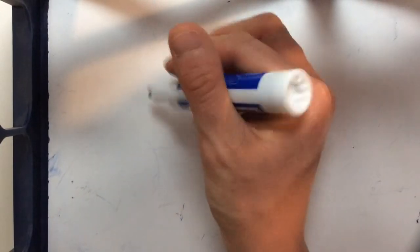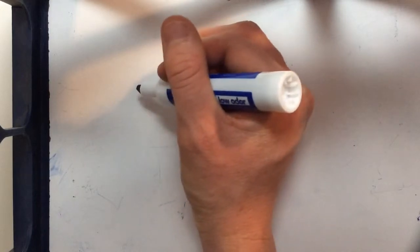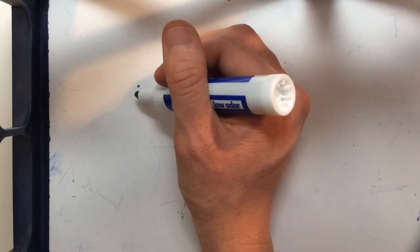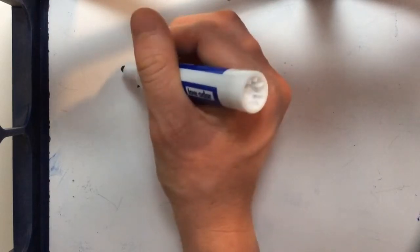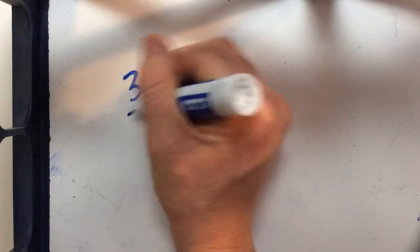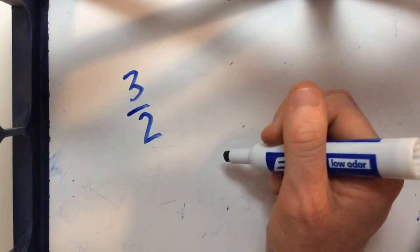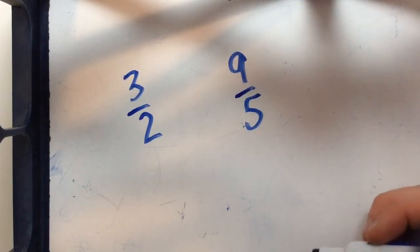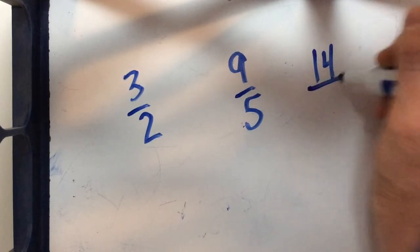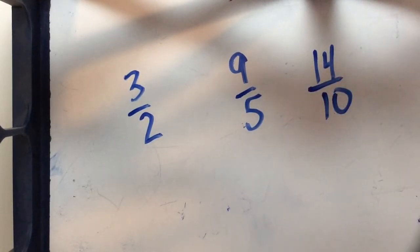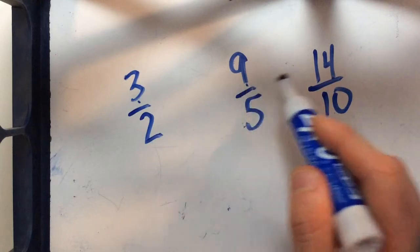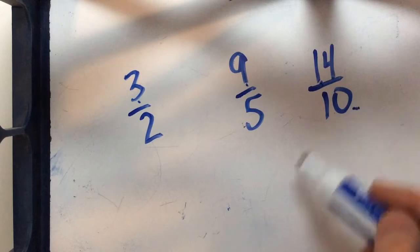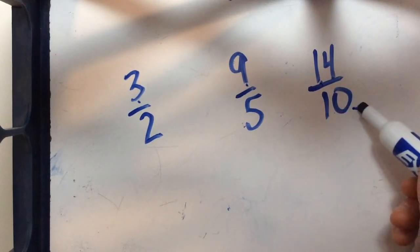So remember that improper fractions are any fractions that are greater than one. The improper fractions we are going to compare today are 3 halves, 9 fifths, and 14 tenths. We can see that these are all improper because their numerators are greater than their denominators which tells us they are greater than 1.